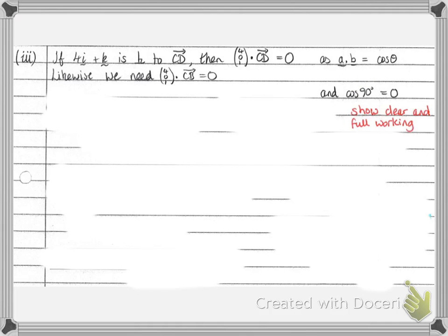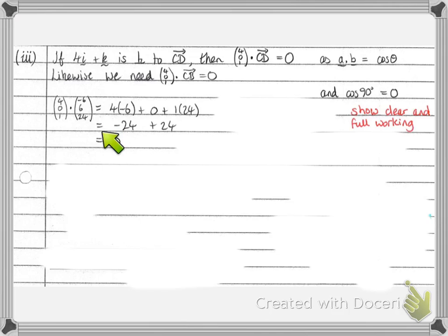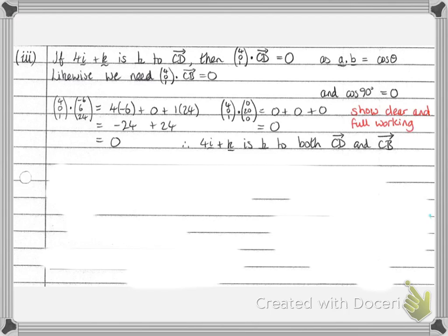So we need to show clear and full working here because we were told they're perpendicular. We're actually showing that this is the case. So we're doing the dot product. So we're doing the product of the i parts of the vectors, so 4 multiplied by minus 6, plus the product of the j parts, 0 times 6 is 0, plus the product of 1 and 24. So that gives us minus 24 plus 24, which is 0. We then repeat the process for the vector dotted with CB, where CB was 0, 20, 0. So in this case, we get all three products are 0, and the sum of those is 0. So that means that we have shown now that 4i plus k is perpendicular to both CD and CB.